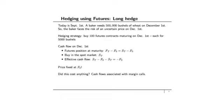Consider hedging using futures with a long hedge. Suppose today is September 1st and a baker needs 500,000 bushels of wheat on December 1st — the baker faces the risk of an uncertain price on December 1st. The hedging strategy is to buy 100 futures contracts maturing on December 1st, each for 5,000 bushels, giving exposure to 500,000 bushels. The futures position at maturity is F(T) minus F0. Since F(T) equals S(T) at maturity, the futures position at maturity becomes S(T) minus F0.